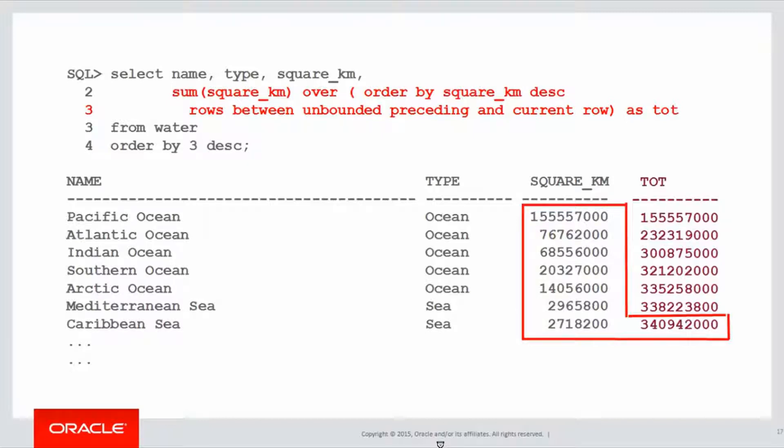And as you can see, as we move down each row, the column values in the tot column changed for each value, running down to our grand total of 340 million square kilometres of ocean.